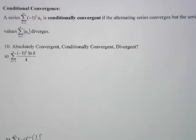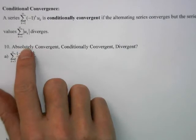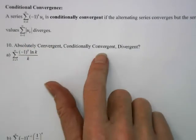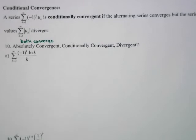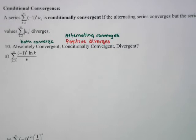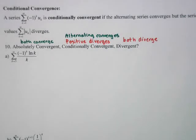Conditional convergence: a series is conditionally convergent if the alternating series converges but the absolute value of the series diverges. So for any given series we ask: is it absolutely convergent (both converge), conditionally convergent (alternating converges but positive diverges), or divergent (both diverge)?